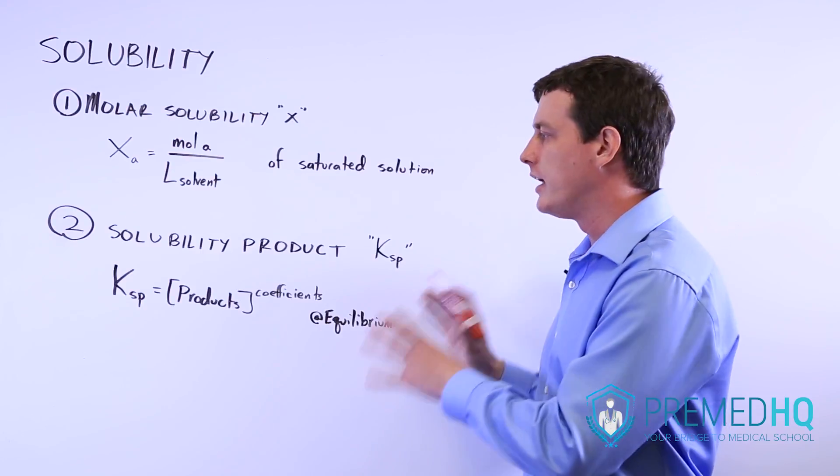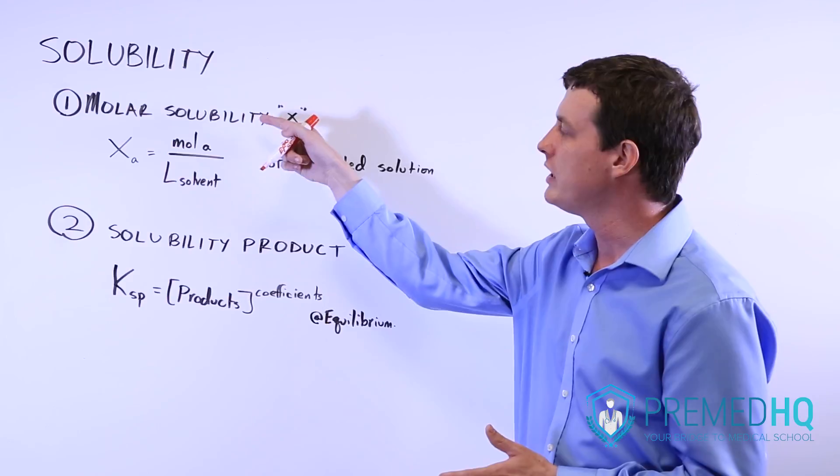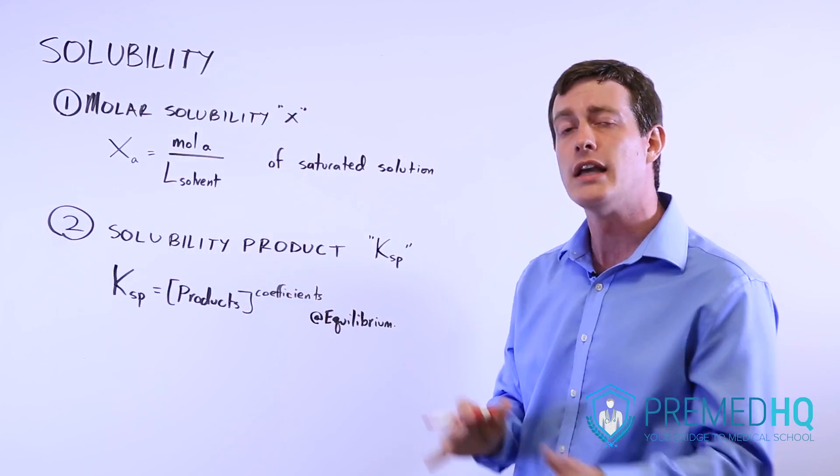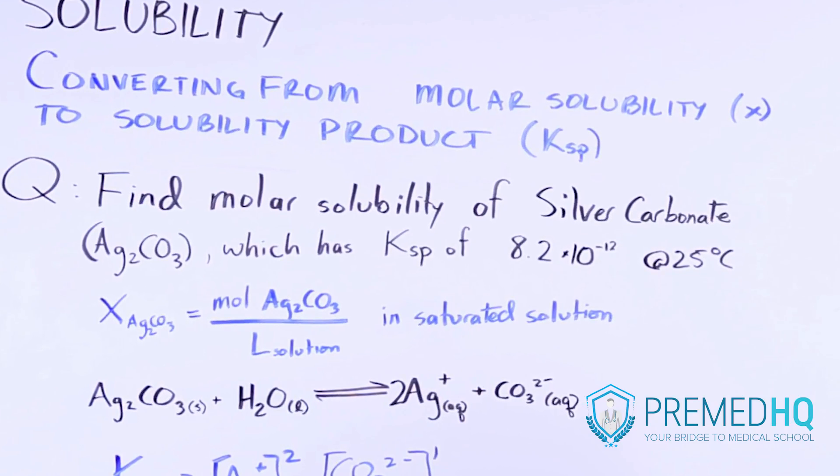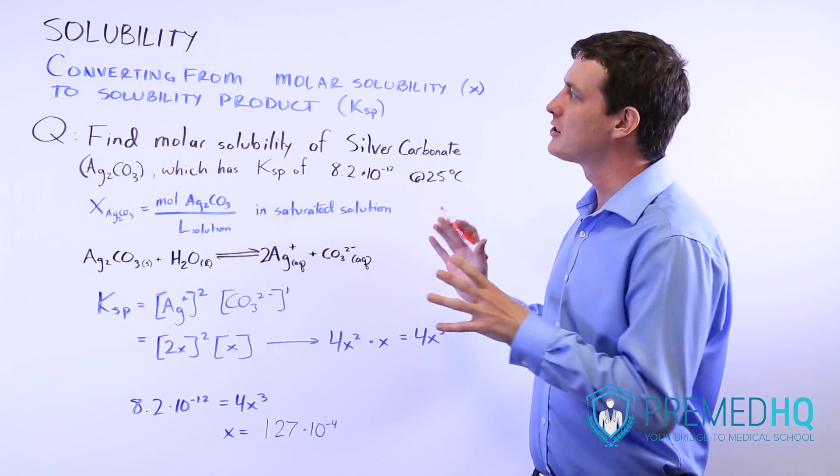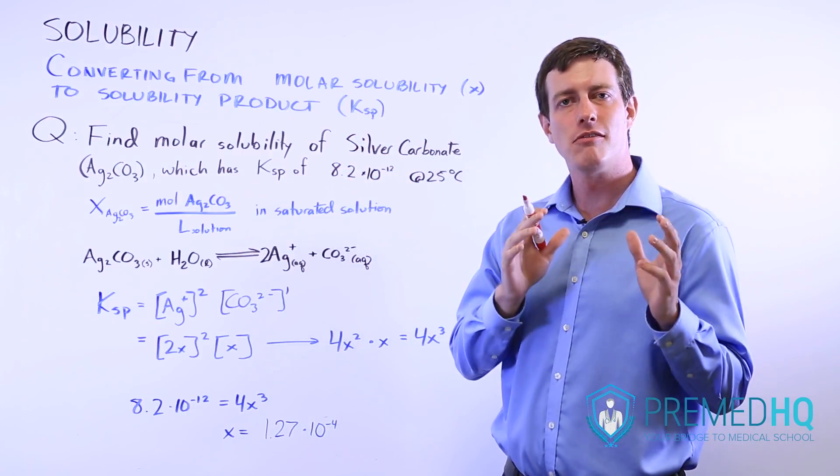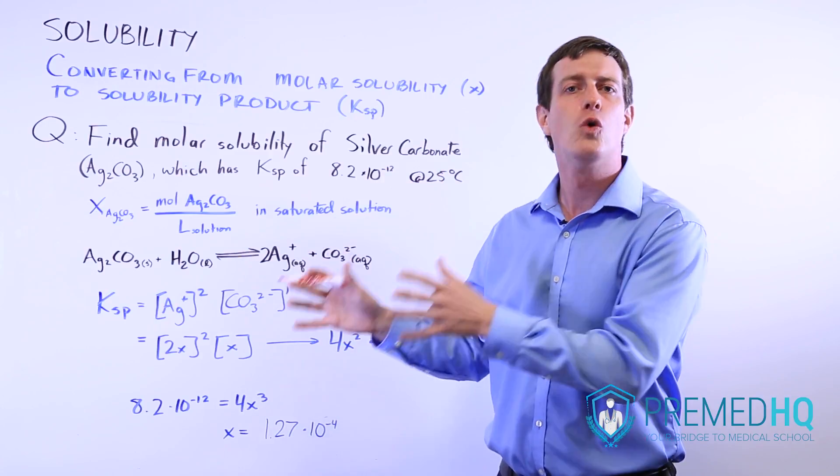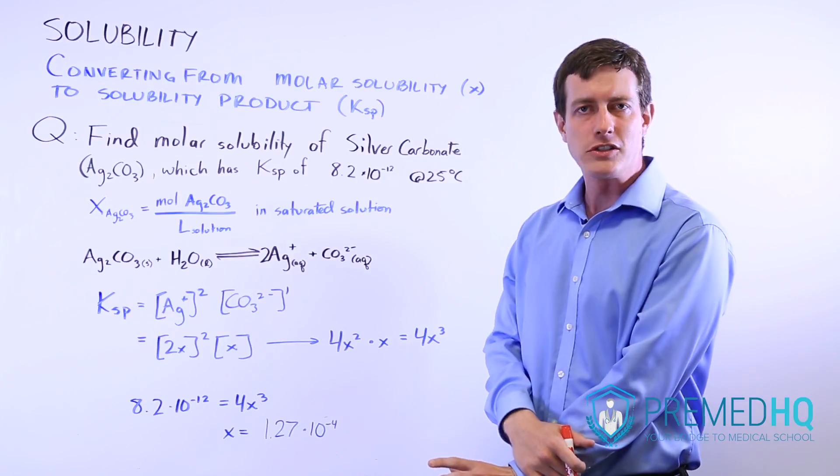Now we'll go into an example of this and show how to move between molar solubility and solubility product and solve for one when you're given the other. Quite frequently you'll encounter questions that test your knowledge of solubility measurements by asking you to convert from molar solubility to solubility product, or the other way around. The way that you do this is actually quite straightforward.